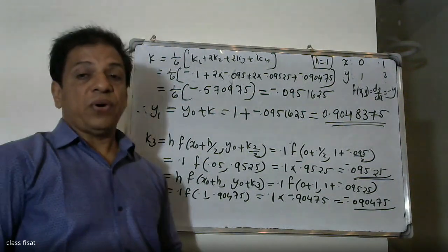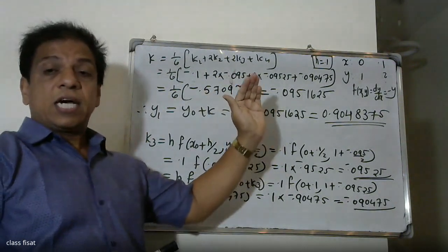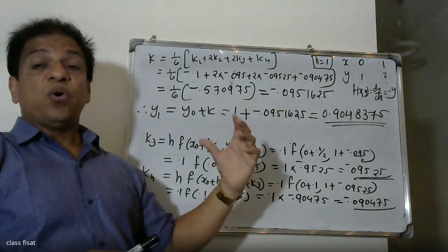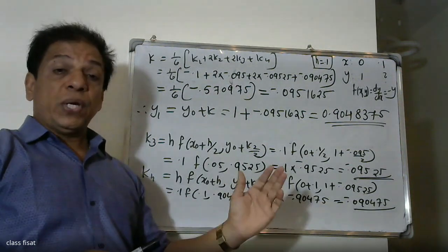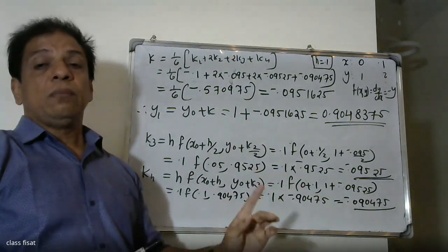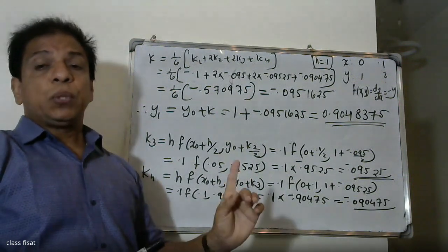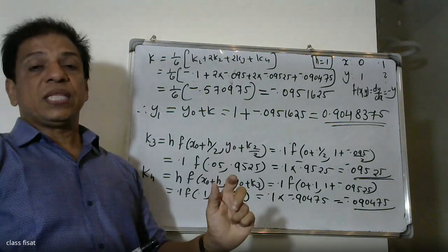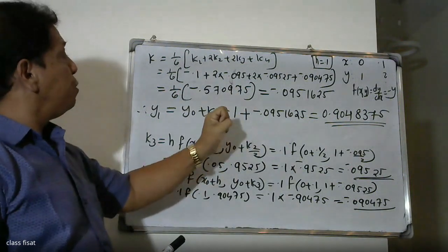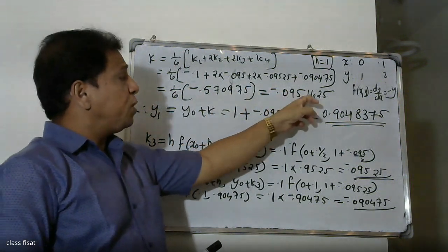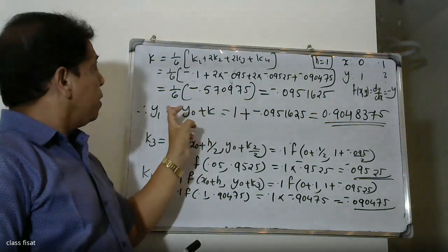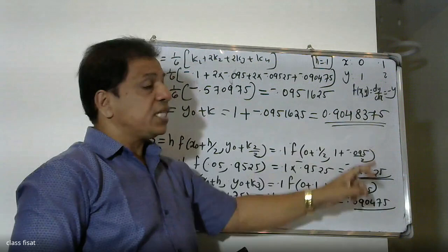The value of y(0.1) is 0.9048375. This completes the calculation using the 4th order Runge-Kutta method, where we applied the formula y1 = y0 + (1/6)(k1 + 2k2 + 2k3 + k4), giving the final answer of 0.9048375.